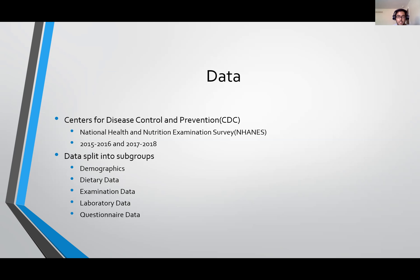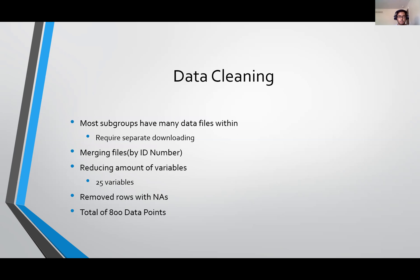The data is split into many subjects: demographics, dietary data, examination data, laboratory data, and questionnaire data, each with many files requiring separate downloading. They all had ID numbers so I was able to merge the files. Originally combining all data files gives around 2,000–3,000 variables, but I reduced the amount analyzed to 25 variables.